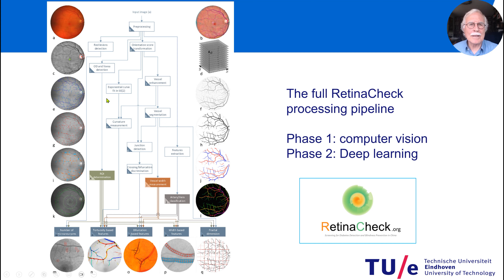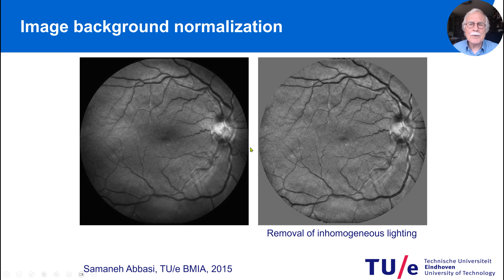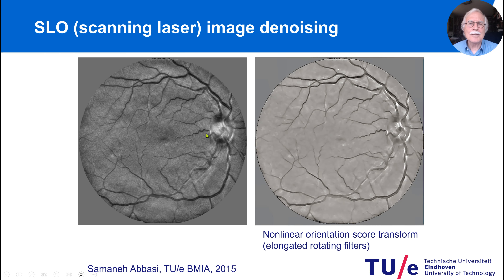The full pipeline was quite complicated, and you see here all the different measurements and stages with the different images. Let me show you a couple of results from our computer vision techniques. First, you need to make the image homogeneous, because you have images that are not so well illuminated in some places. So you remove inhomogeneous lighting.